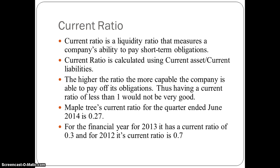The Current Ratio is a Liquidity Ratio that measures a company's ability to pay short-term obligations. These short-term obligations are short-term liabilities. The Current Ratio is calculated using Current Assets divided by Current Liabilities. The higher the ratio, the more capable the company is able to pay off its obligations.